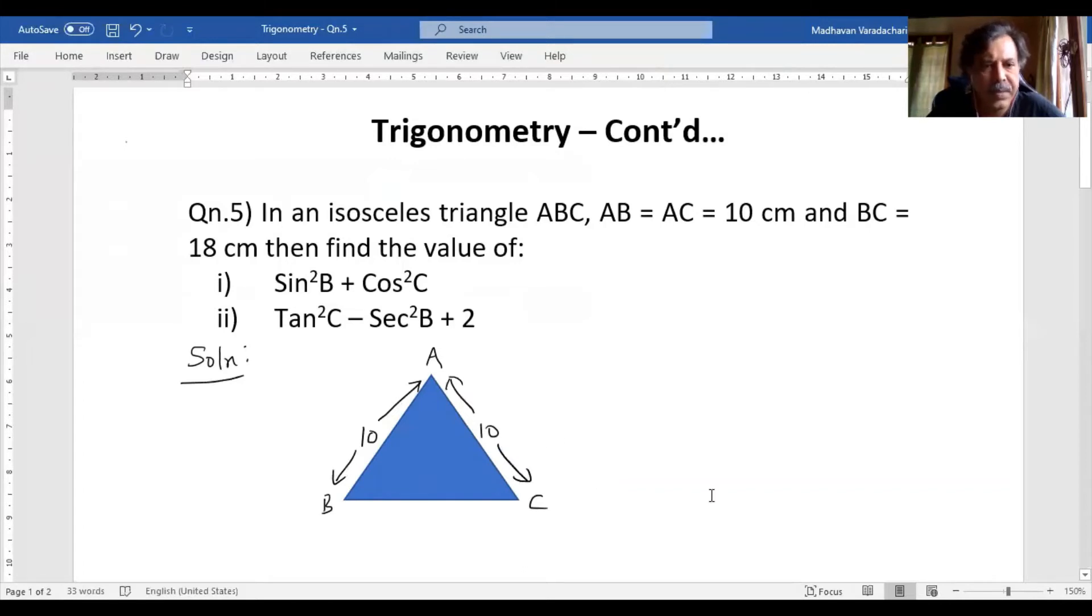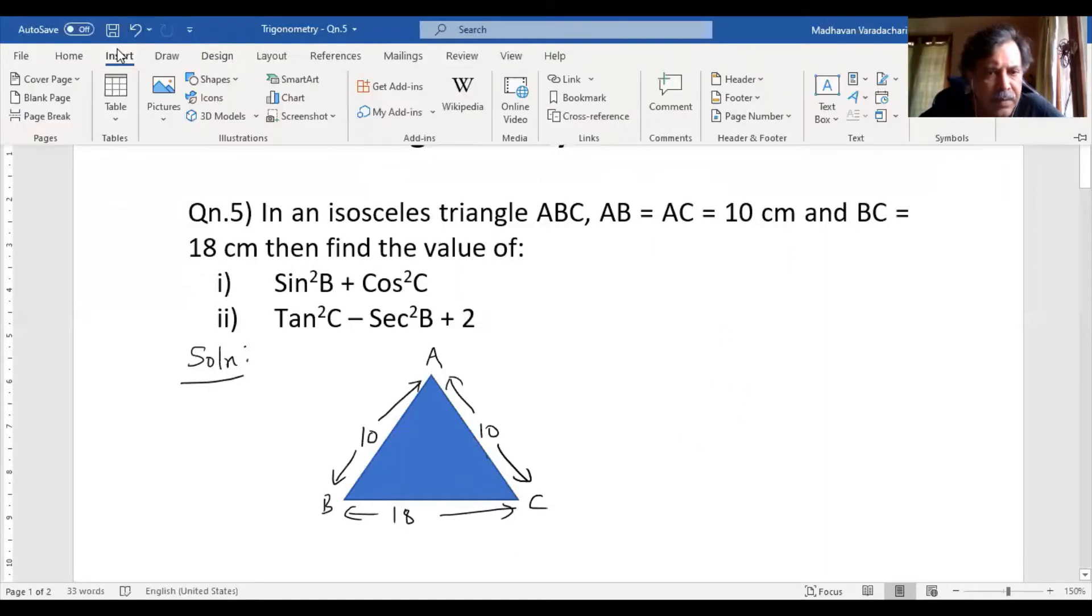And BC is given as 18 cm. Now let us draw a perpendicular from the vertex A to meet your BC.